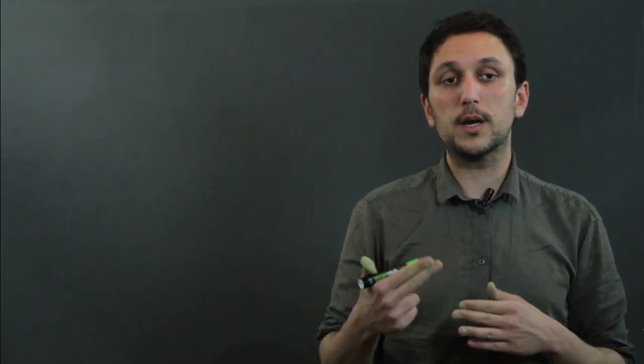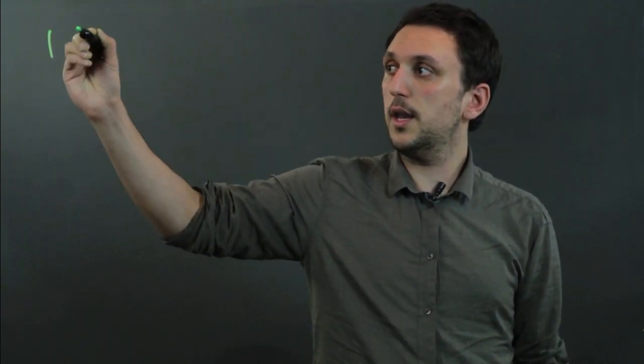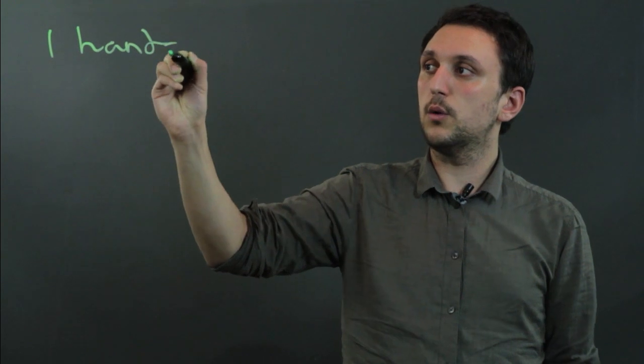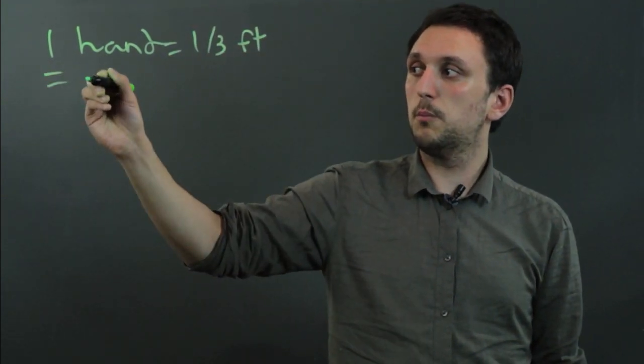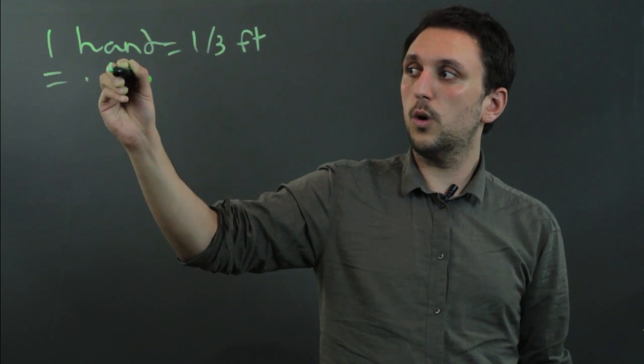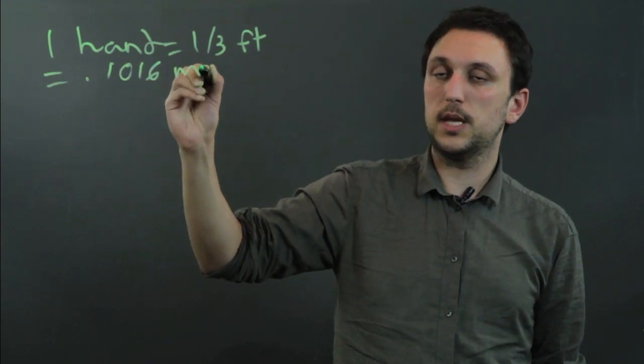And the answer is yes, if you're using cubic hands. Now a hand is a measurement in the American system that equals about a third of a foot. So one hand equals one third of a foot, which also equals .1016 meters.